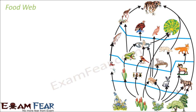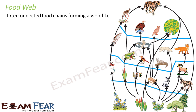Now that we have discussed food chains, it is time to introduce food web. In a food chain, we talk about a linear series of organisms which feed on one another. In a food web, we talk about interconnected food chains. The picture on the screen gives you a web-like appearance — similar to a spider's web — formed by interconnected food chains forming a web-like pattern.